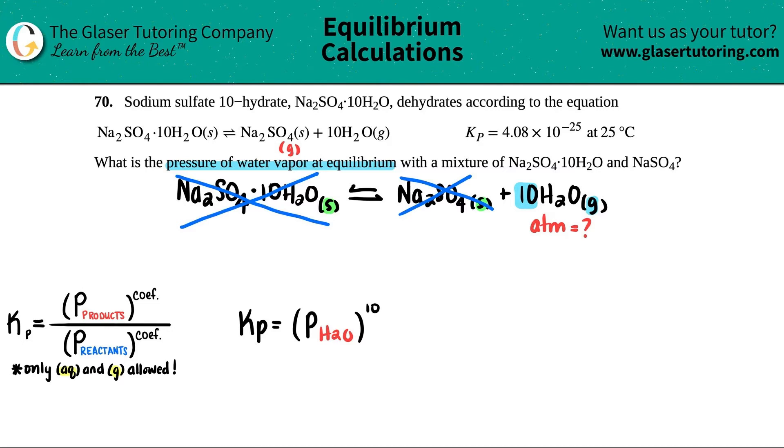They told us the Kp number was 4.08 times 10 to the negative 25, and we're trying to solve for this, so let's call it x. 4.08 times 10 to the negative 25 equals x, and that's raised to the 10th.